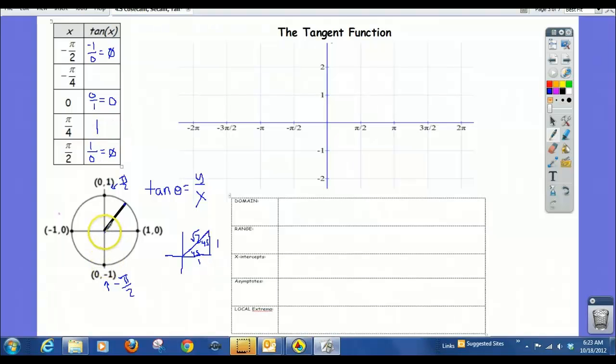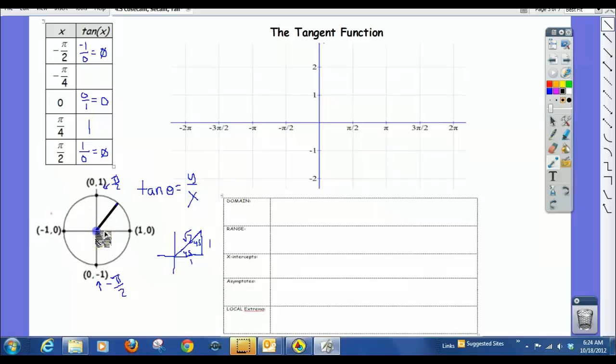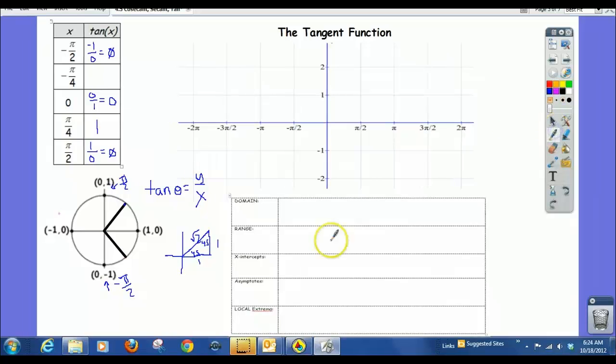And negative pi over 4, well, you'd be drawing the same sort of triangle, but you'd be in quadrant 4. So that would be down here. And you can probably guess by symmetry what the tangent of that would be. If you can't get it from the unit circle, that would be a negative 1, that would be root 2. But the tangent of negative 45 would be negative 1 over 1, which would be negative 1. So now we have enough. We have enough to sketch this graph.